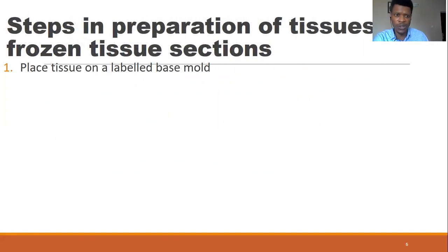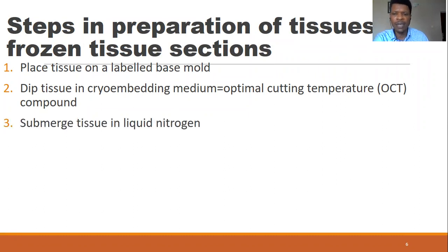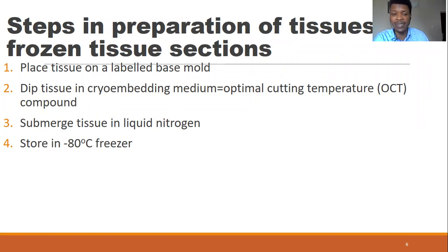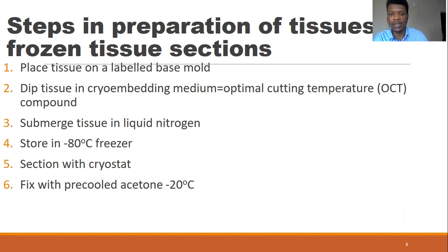For the frozen tissue sections, the tissues have to be placed on a labeled base mold. Then they have to be dipped into a cryo-embedding medium known as OCT — optimal cutting temperature compound. Afterwards, this tissue is submerged in liquid nitrogen. After it has become frozen and very hard, it is stored in a minus 80 degrees Celsius freezer until it is ready for sectioning. If you want to section immediately, from the liquid nitrogen you can go directly into cryo-sectioning using the cryostat. Afterwards, the tissue will be fixed with acetone at minus 20 degrees Celsius, then stained, then viewed under the microscope.